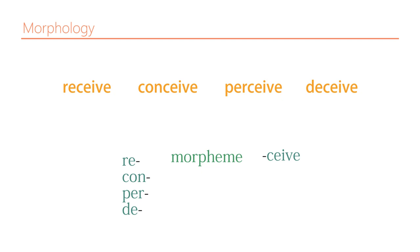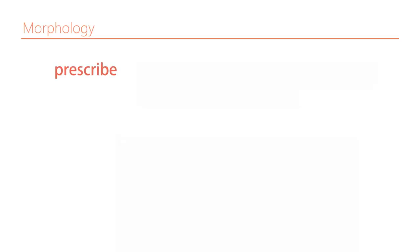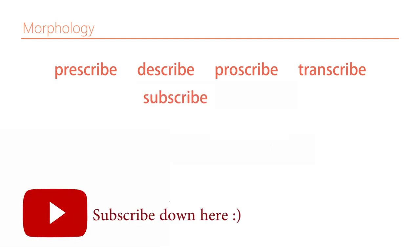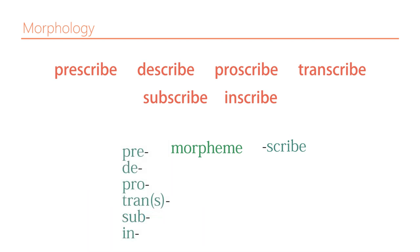However, it is relevant in the sense that we can see a pattern. Everybody would probably think there is some meaning here. In words like 'receive,' 'conceive,' 'perceive,' or 'prescribe,' you already know that '-scribe' is probably a morpheme. Other examples are 'describe,' 'proscribe,' 'transcribe,' 'subscribe,' and 'inscribe.'